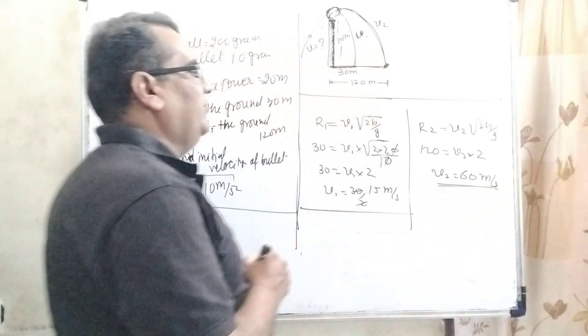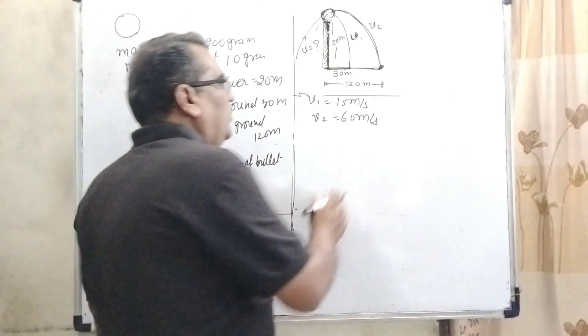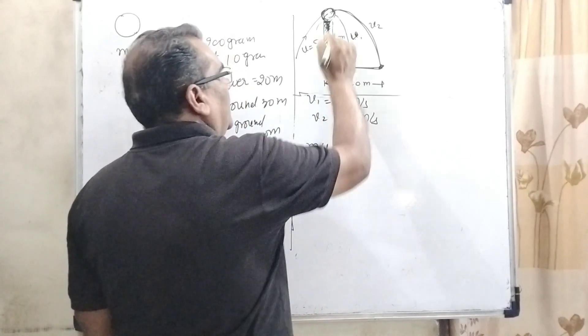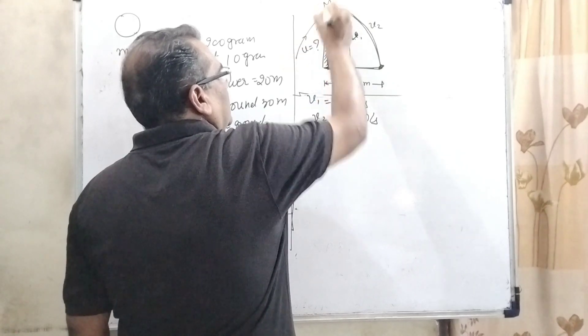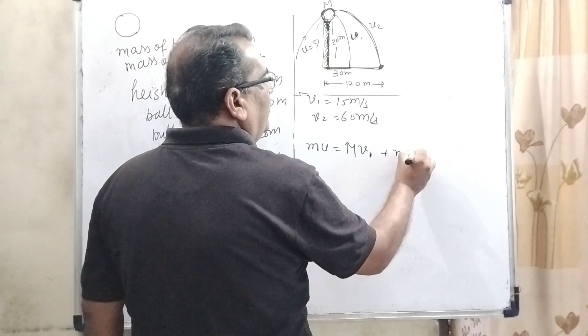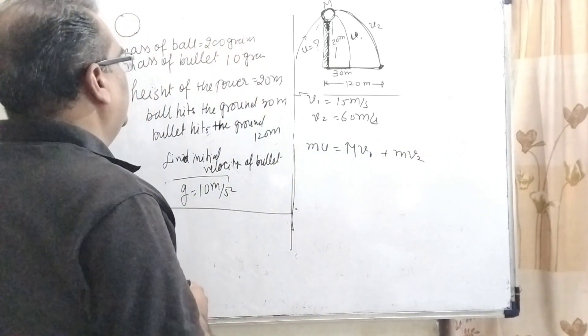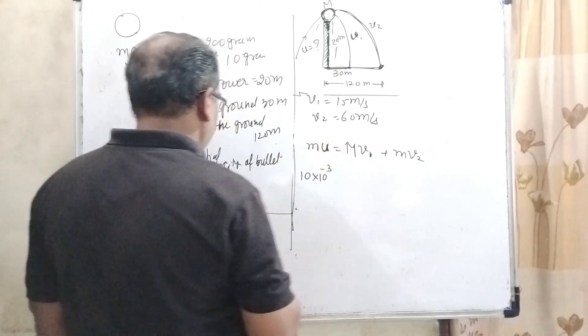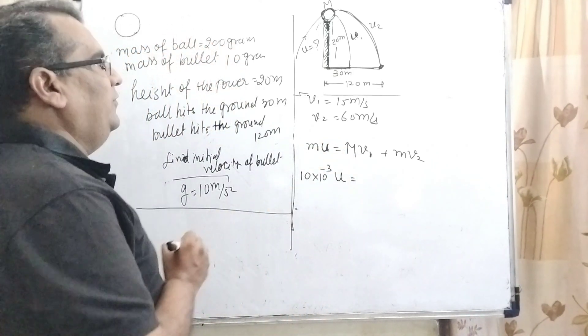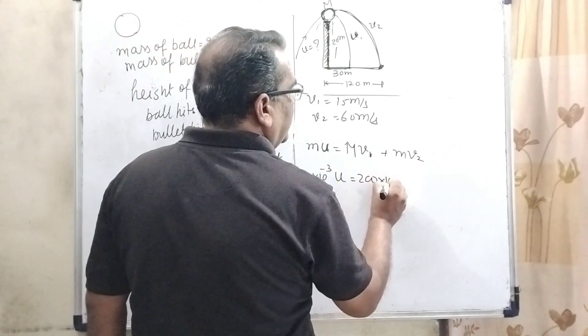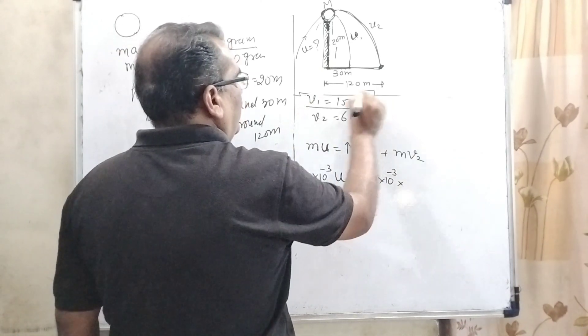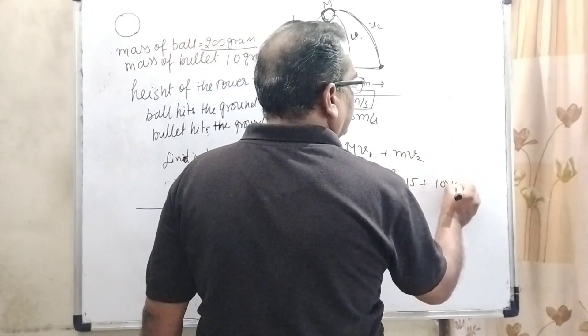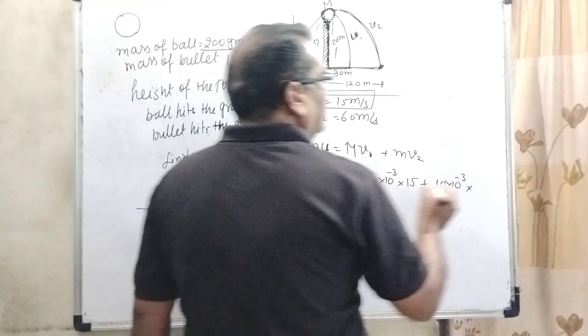This is the velocity of this bullet after collision. Now, using law of conservation of momentum, initial momentum M times U is equal to the mass of this ball, capital M, times velocity V1, plus mass m times V2. The mass of the bullet is given 10 gram, so 10 into 10 raised to the power minus 3. We have to find out the initial velocity U. Mass of ball is given 200 gram, so 200 into 10 raised to the power minus 3, and velocity of this ball is 15. Again, the mass of the bullet is 10 gram and velocity is 60 meter per second.